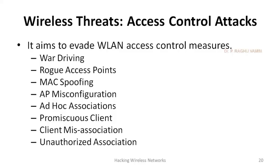The next attack is rogue access points — fake access points installed by hackers. Next is MAC spoofing: all wireless devices have MAC addresses along with their IP addresses, and attackers may fabricate new MAC addresses and attach them to rogue access points. Access point misconfiguration is also checked during war driving, as network engineers may not have changed default access settings like admin username and admin password.